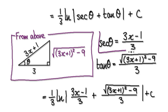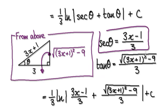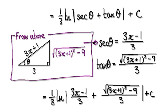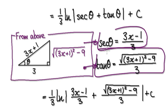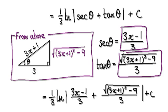From the diagram, we can obtain this. We're trying to replace tan theta. Tan is opposite over adjacent. So from the diagram, we can obtain this and from the diagram we can obtain this. So: secant of theta equals this thing here, tan of theta equals this thing here.